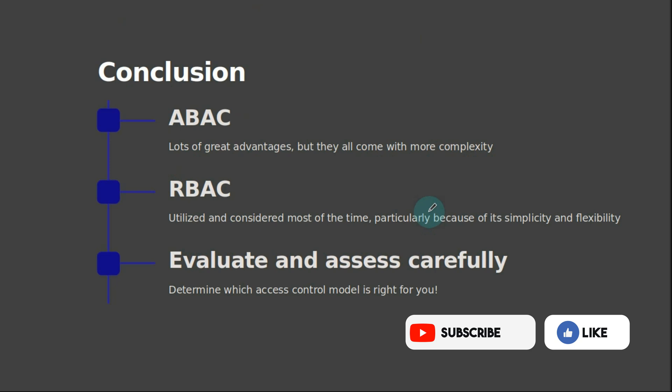Last but not least, the conclusion. ABAC has lots of great advantages, but they all come with more complexity. RBAC is utilized and considered most of the time, particularly because of its simplicity and flexibility. So which one's best? The bottom line is to evaluate and assess carefully — you must determine which access control model is right for you. In certain scenarios, it might be worth considering a hybrid approach. A combination of both might lead you to better success and much more granular control. In the end, you know your organization best and what its fully desired needs are, so there is no true determination of which one is best over the other.